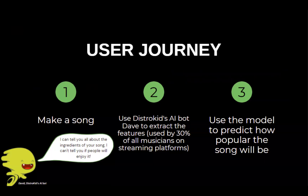So the user's journey is as follows: we make a song, extract its features, then use my model to predict the popularity. As simple as that.